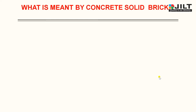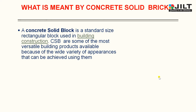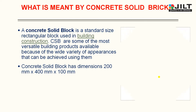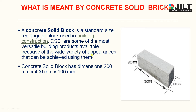Now let us move towards what is meant by a concrete solid block. A concrete solid block or brick is a standard-size rectangular block used in building construction, abbreviated as CSB. It is one of the most versatile building products available because of the wide variety of appearances that can be achieved using it. The concrete solid block has dimensions of 200 mm × 400 mm × 100 mm (length, breadth and height), though dimensions may vary according to requirement.